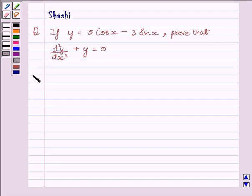Let us run the solution now. We have given y is equal to 5 cos x minus 3 sin x.